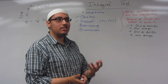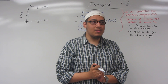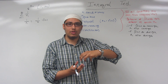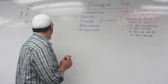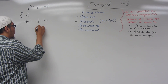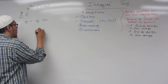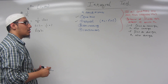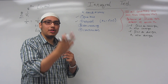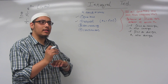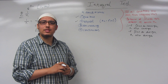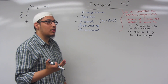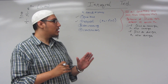Condition number three is that the series has to be decreasing. If the series is decreasing, the first term should be larger than the next term. Plugging in 1: f(1) = 1 over 1, which is 1. Plugging in 2: f(2) = 1 over 2, which is 0.5. Since 0.5 is smaller than 1, we can say that the series is decreasing.